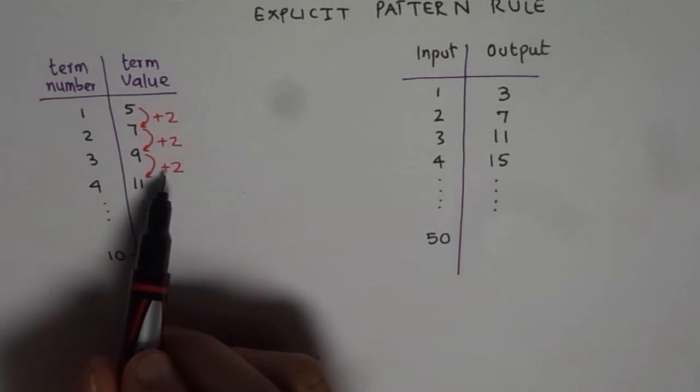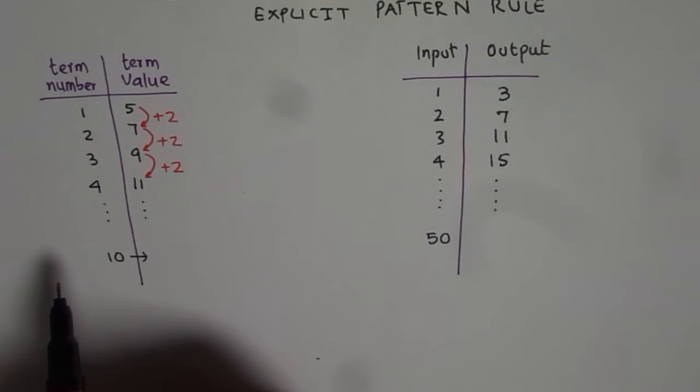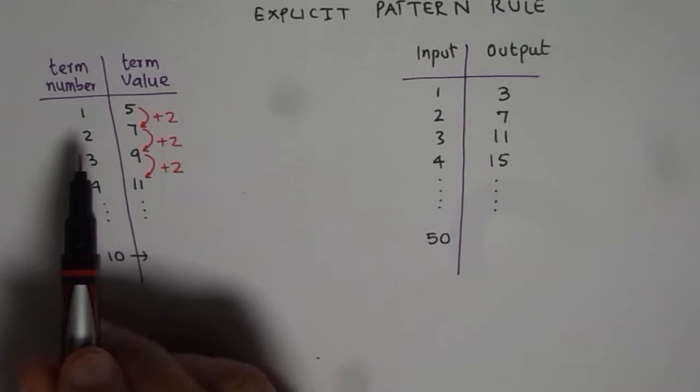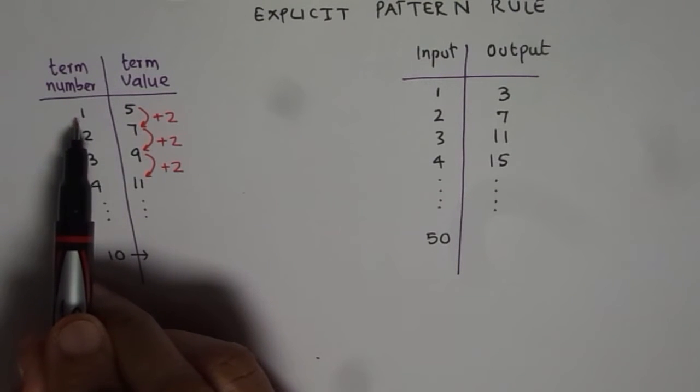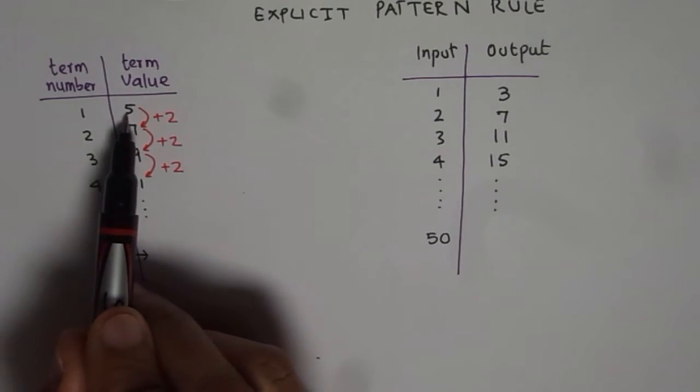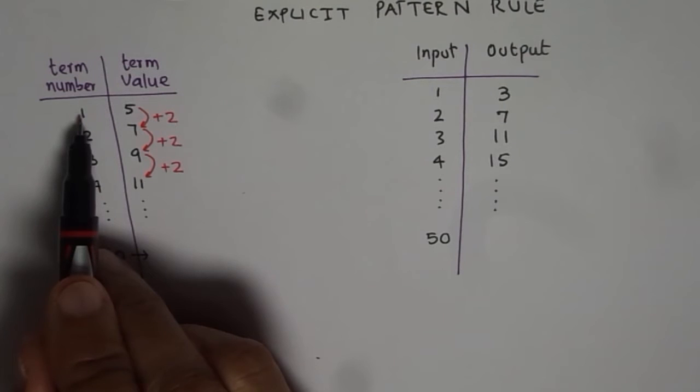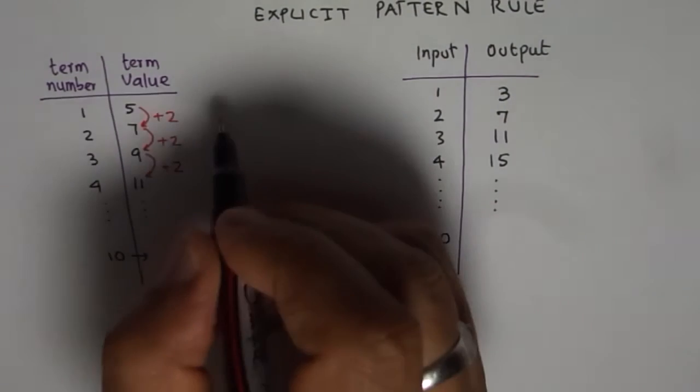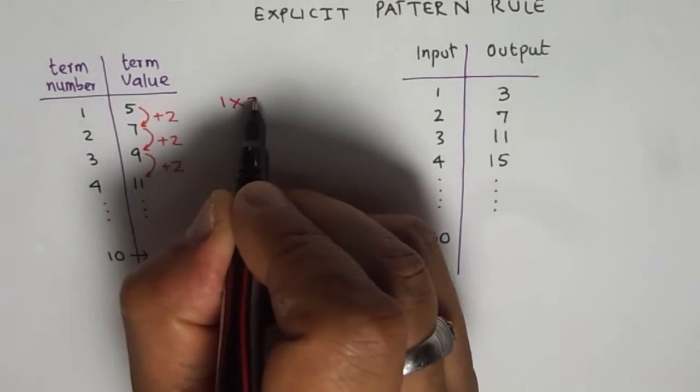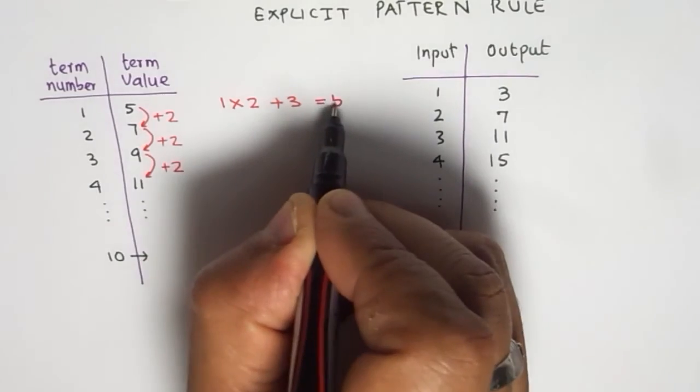So that means we need to multiply input by 2 and get the output. Now let us try how to get the output by multiplying input by 2. First term is number 1 itself. Number 1 gives 5 as the output. 2 times 1 is how much? 2 times 1 is 2. How will you get 5? If you add 3, right? So we get 1 times 2 is 2 plus 3 gives us 5.